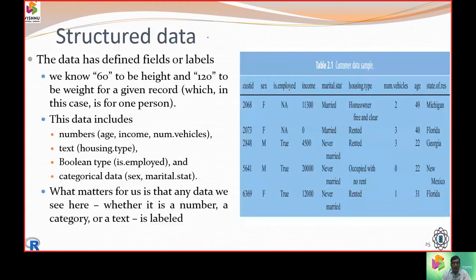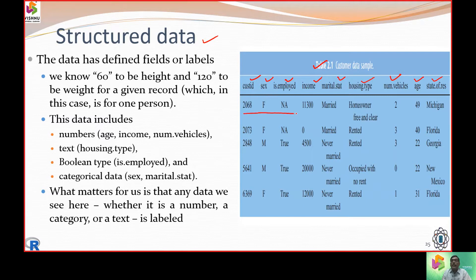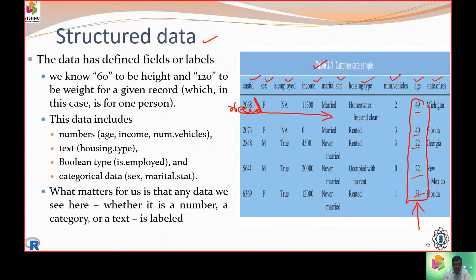Here is an example of structured data. In this table we have customer ID, sex, employed, income, marital status, housing type, number of vehicles, age, and status of residence. We can see the data is totally structured — we have complete information for each record. For example, we can easily read the ages of different customers: 49, 40, 22, 22, 31.